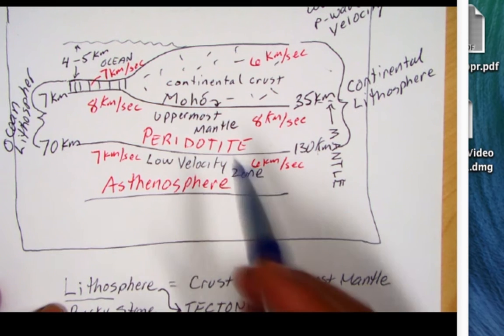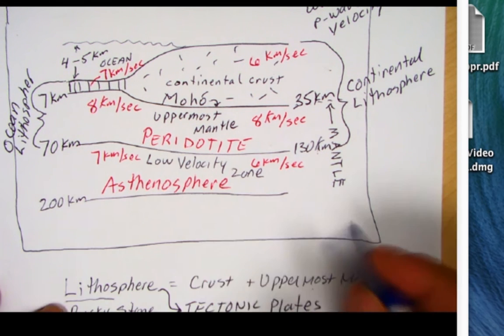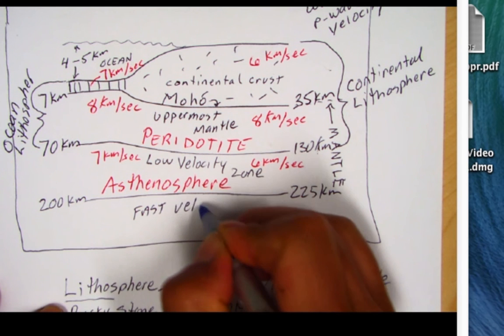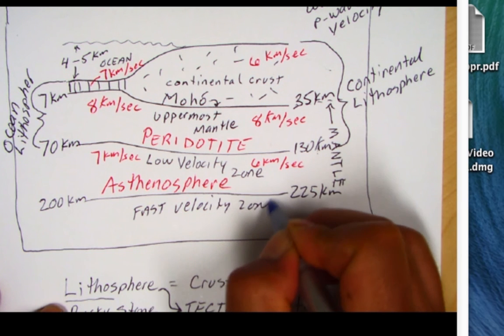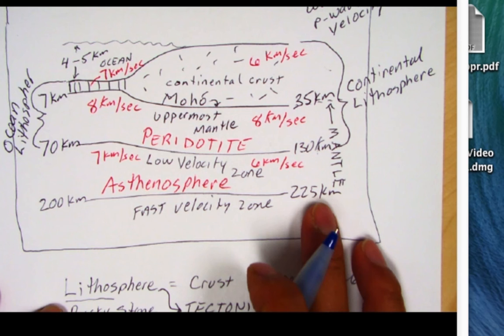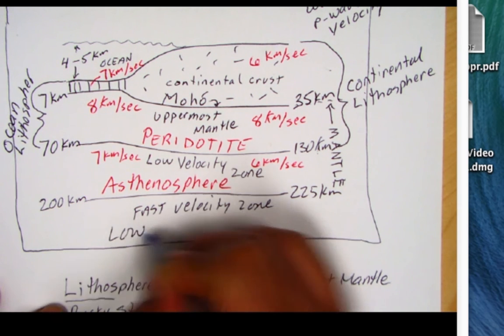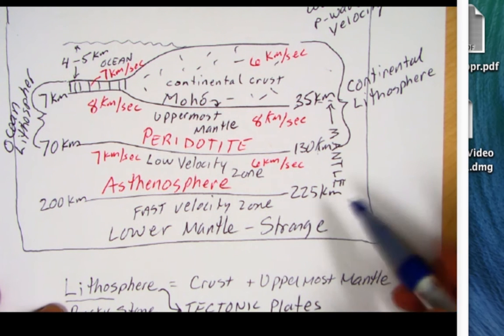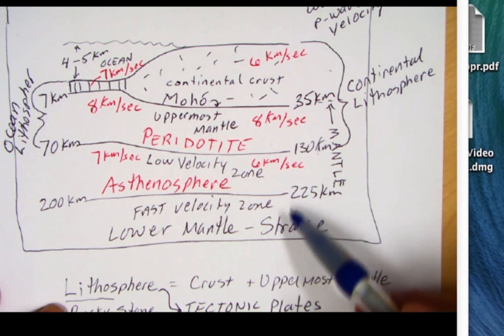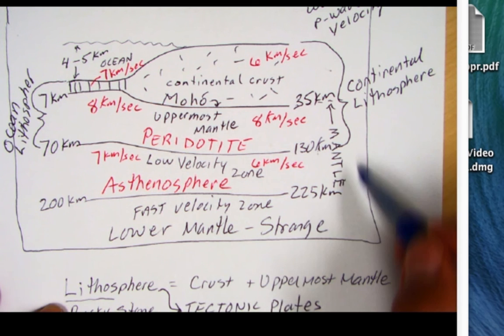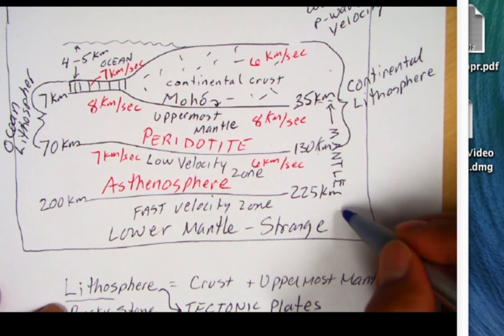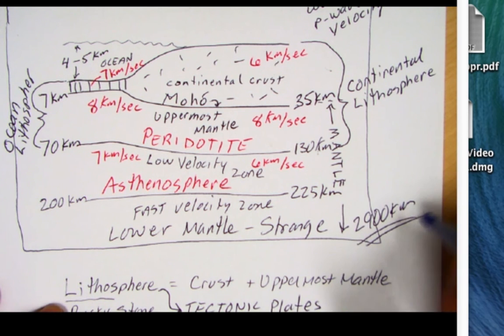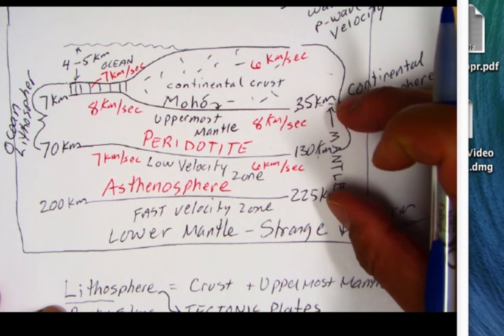Now as we keep going down around maybe 200 kilometers under ocean basins and about 225 kilometers under continents we find another fast velocity zone. In other words, the seismic waves start increasing their speed again. And so now obviously we're back to really hard, strong rock. And so this is going to be the lower mantle. It's strong. And we start increasing that density. Remember, the mantle ranges from about 3.3 to 5.7 going down. And also note that this lower mantle, we've only gone 225 kilometers down to the asthenosphere. We still have about maybe 2700 kilometers to go because remember the mantle is 2900 kilometers thick. So we're only looking at the very most uppermost parts of the mantle in this region here.